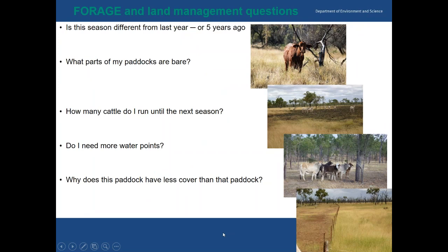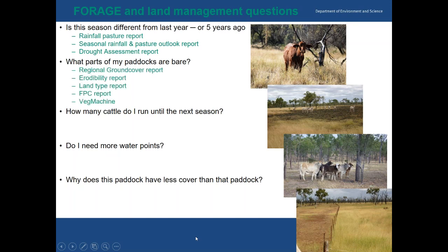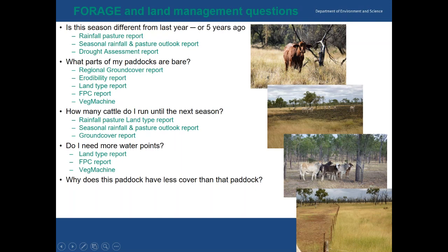Revisiting the land management questions with FORAGE: Is this season different from last year or five years ago? Use the Rainfall and Pasture Reports, Seasonal Rainfall and Pasture Outlook, and Drought Assessment Report. What parts of my paddocks are there? Use the Regional Ground Cover Report, Erodibility Report, Land Type Report, FPC Report, and Veg Machine. How many cattle to run until next season? Use Rainfall and Pasture, Land Type, Seasonal Outlook, and Ground Cover Reports. Do I need more water points? Land Type and FPC Reports and Veg Machine. Why does this paddock have less cover? Land Type, Regional Ground Cover, and FPC Reports.